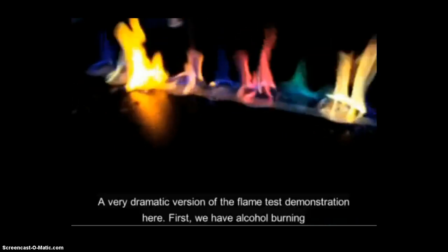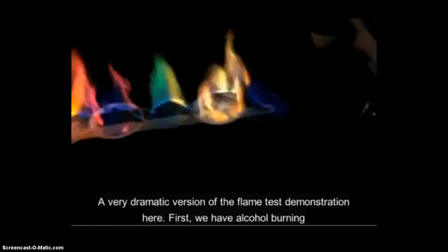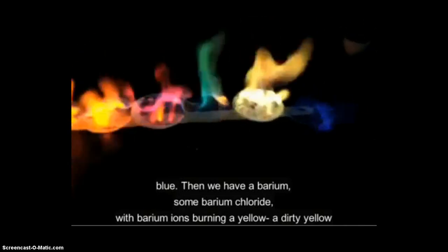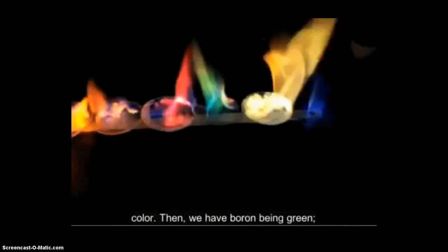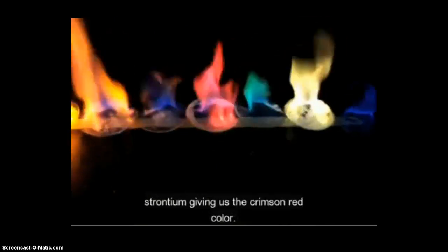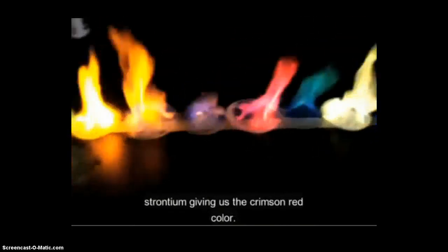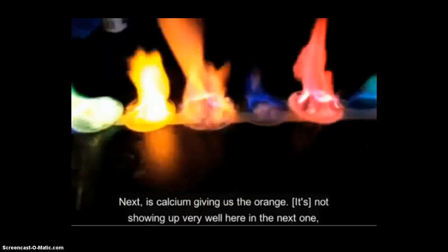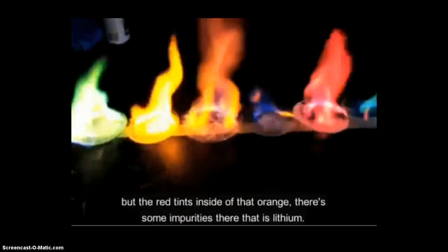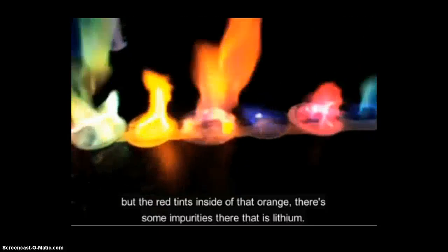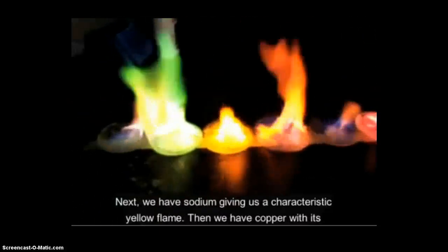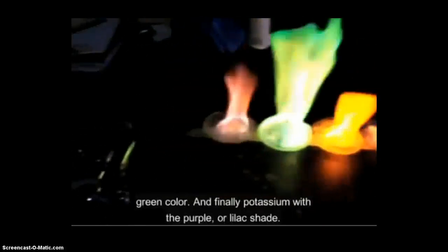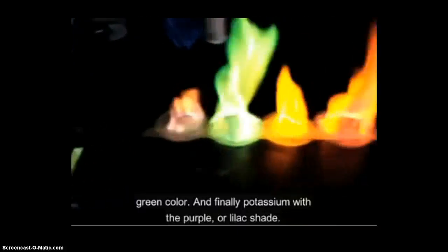Very dramatic version of the flame test demonstration here. First we have alcohol burning blue, then we have some barium chloride with barium ions burning in a yellow, a dirty yellow color. Then we have boron being green, strontium giving us the crimson red color, next is calcium giving us the orange, not showing up very well here but the red tints inside of that orange there, there's some impurities there, that is lithium. Next we have sodium giving us a characteristic yellow flame, then we have copper with its green color and finally potassium with the purple or lilac shade.